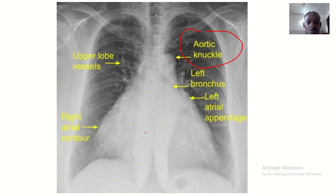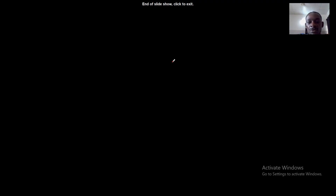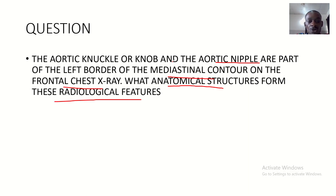The aortic nipple is not located here, but rather around this area, where the superior intercostal vein is crossing the aorta to drain into the left brachiocephalic vein. Those are the two components of the mediastinal contour of the frontal chest X-ray. See you in the next tutorial.